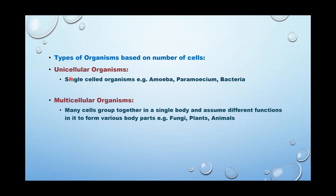Based on the number of cells, living organisms are divided into two types: unicellular and multicellular. Single-celled organisms are called unicellular, and examples are amoeba and paramecium. In multicellular organisms, many cells group together to form tissues, and many tissues group together to form organs to perform specific functions. Examples would be fungi, plants, and animals.